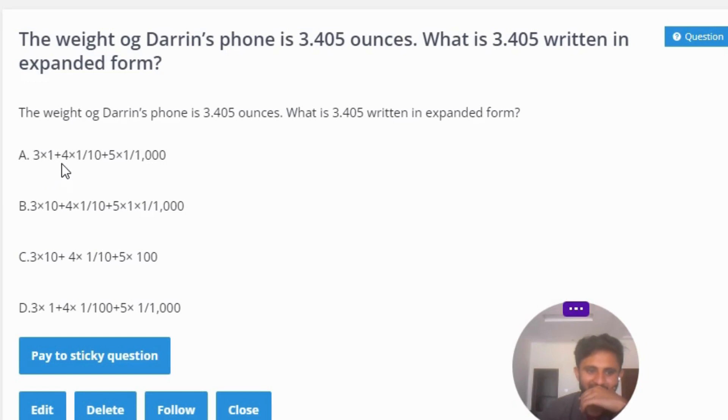Option A: 3 multiply 1 plus 4 multiply 1 divide 10 plus 5 multiply 1 divide 1,000. Option B: 3 multiply 10 plus 4 multiply 1 divide 10 plus 5 multiply 1 divide 1,000.